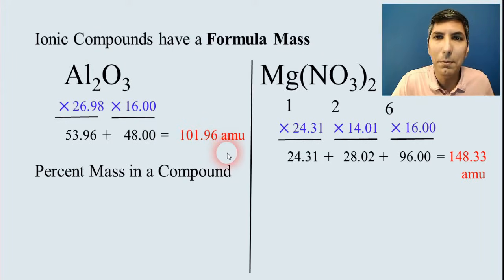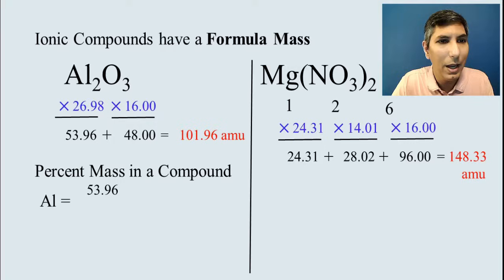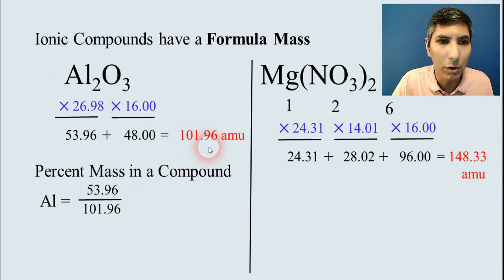We just said that, for example, in our last video, we calculated that aluminum oxide has that overall total formula mass of 101.96. To find the percent mass for each element, we just take each individual element's mass value and divide it by the total.